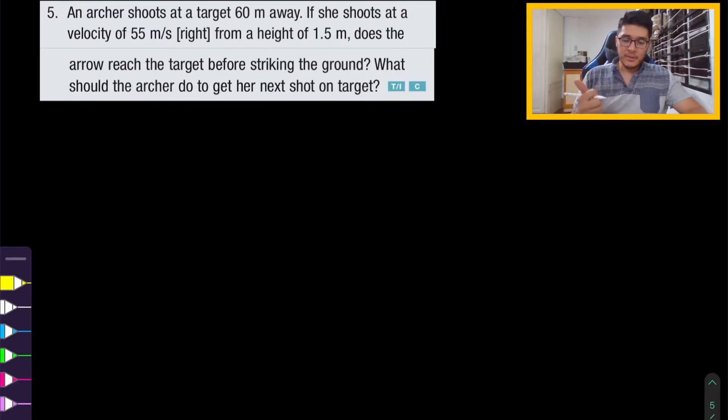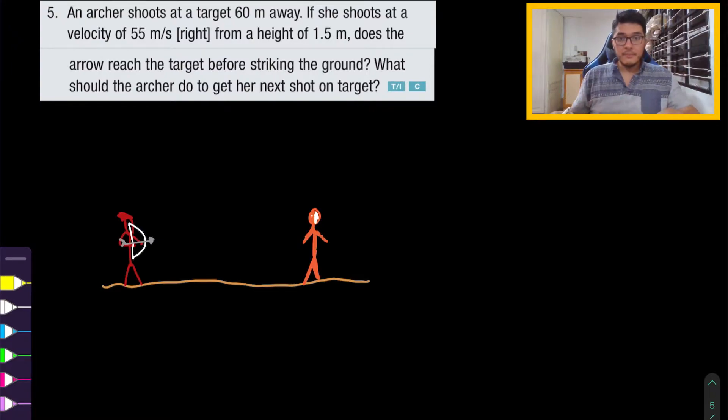We have an archer and they're 60 meters away from a target. So let's try to draw that situation. So I was trying to get a bit creative there. Here we have the archer and we have the red arrow. So if you're a comics fan, you will recognize the red arrow. And the enemy here, we have Deathstroke. So Deathstroke is going to be our target.